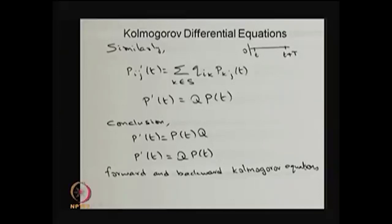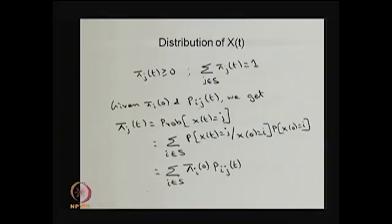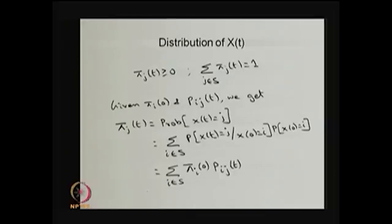To solve these differential equations, you need an initial condition: the transition probability of the system moving from state i to state j at time 0. Given this initial condition, solving the forward or backward equation yields p_ij(t). Once p_ij(t) is known, together with the initial state probability pi_i(0), one can find the distribution of X(t).